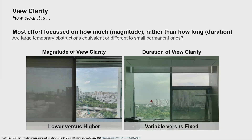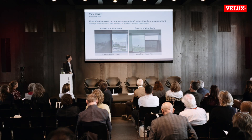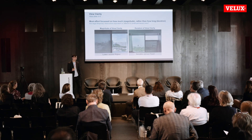Another challenge when characterizing view clarity is that we often look at the magnitude — how much view clarity there is — but we don't as well understand the duration of view clarity. A good way to visualize this is to ask: if we have a very large but temporary obstruction, is the level of view clarity going to be the same as — or different from — a small but permanent one? At the moment we don't have answers to this and don't understand what this trade-off between magnitude and duration will look like.